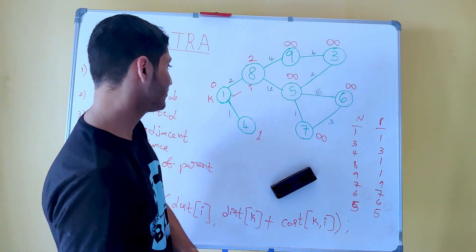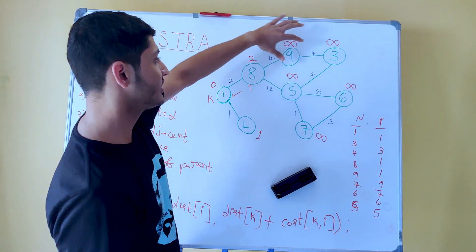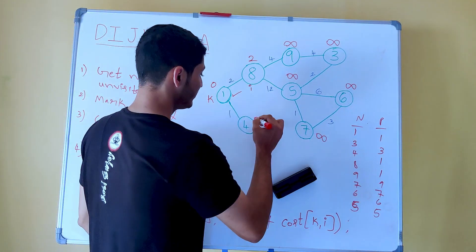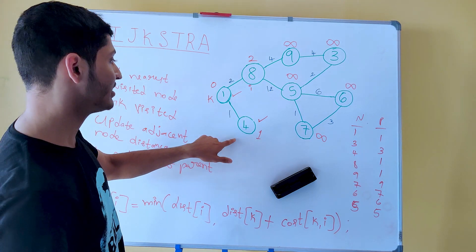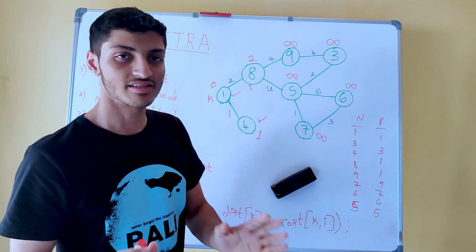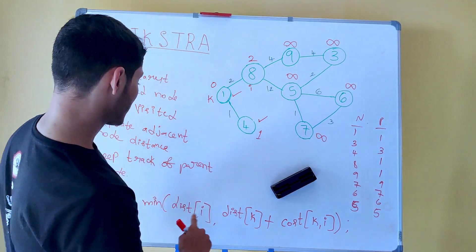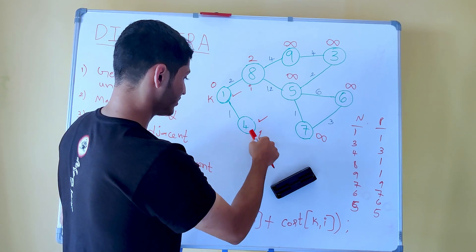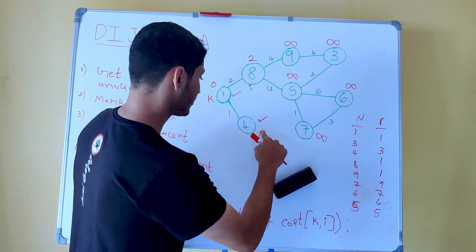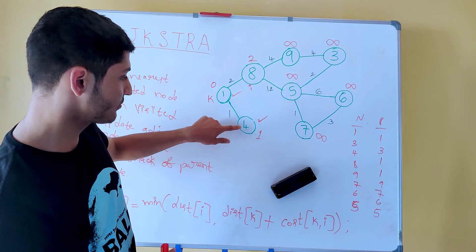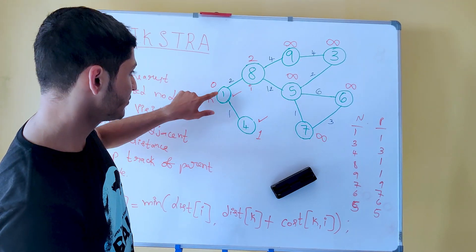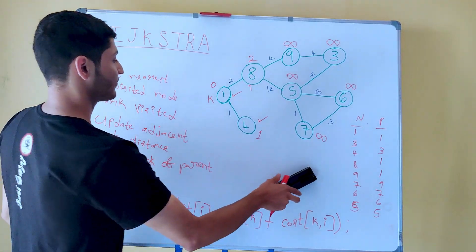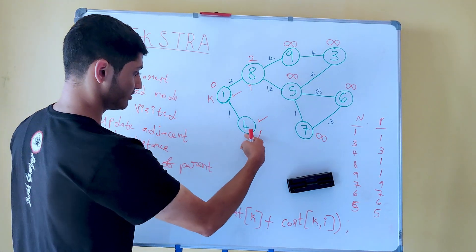Going to the next iteration, we get the nearest unvisited node. Out of all the distances, the least distance is 1 and node 4 is unvisited, so this is the nearest unvisited node. We go to this node and mark it as visited. Once marked, we look at all its adjacent nodes — node 1 is adjacent. The new distance for node 1 is minimum of its previous distance 0 and distance to reach k (which is 1) plus the cost of going from 4 to 1 (which is 1), giving 2. Minimum of 0 and 2 is 0, so we will not update anything, and since we don't update, we also don't update the parent.